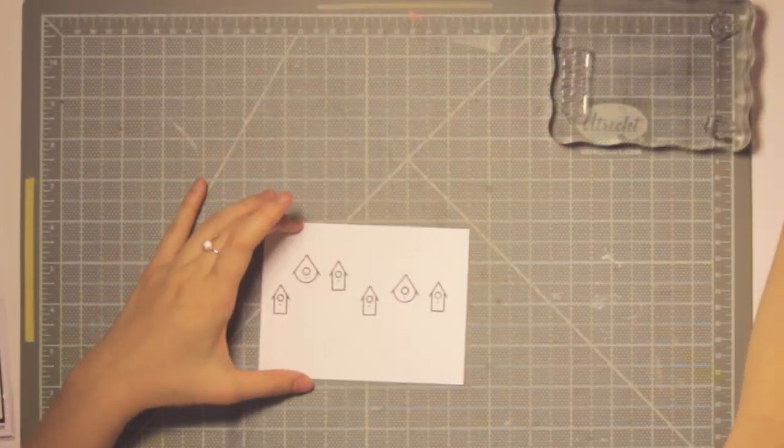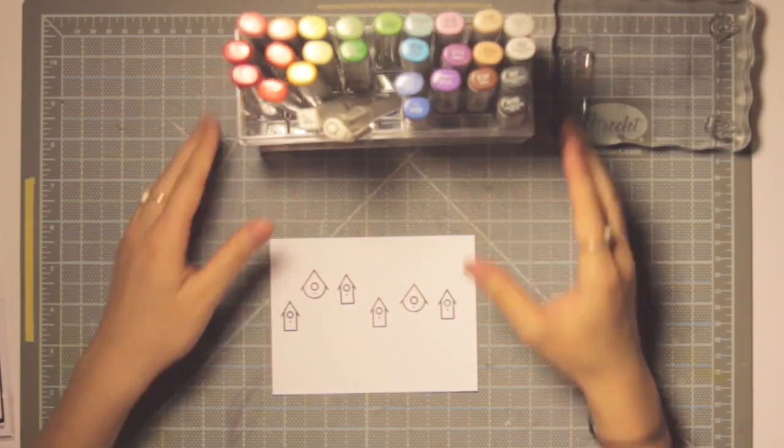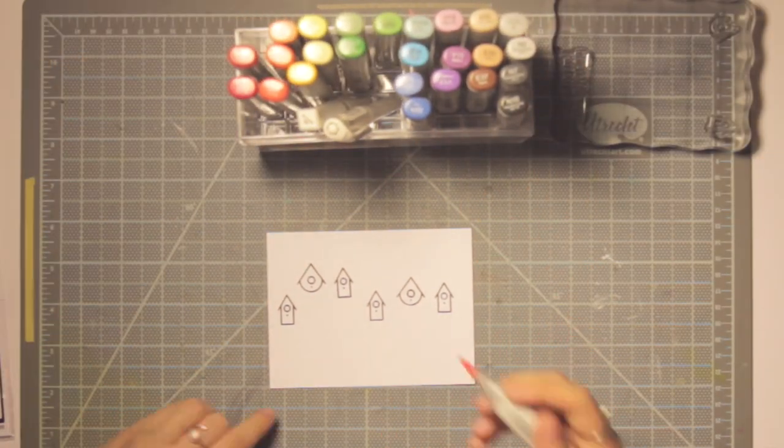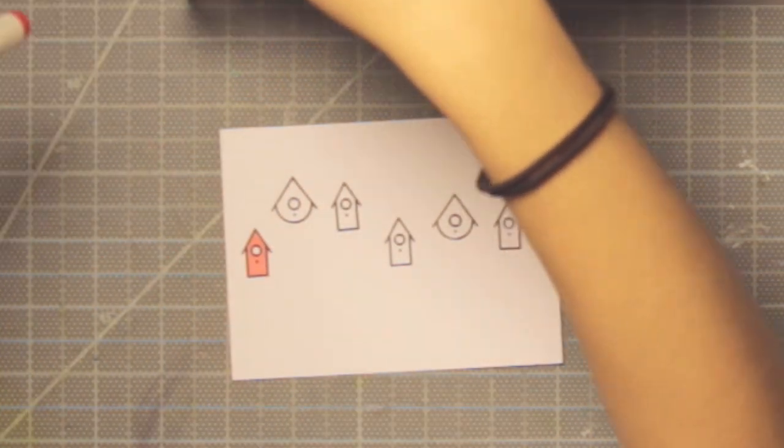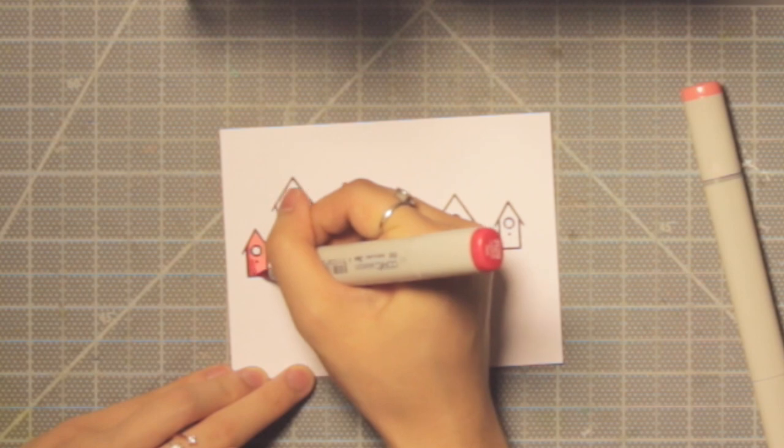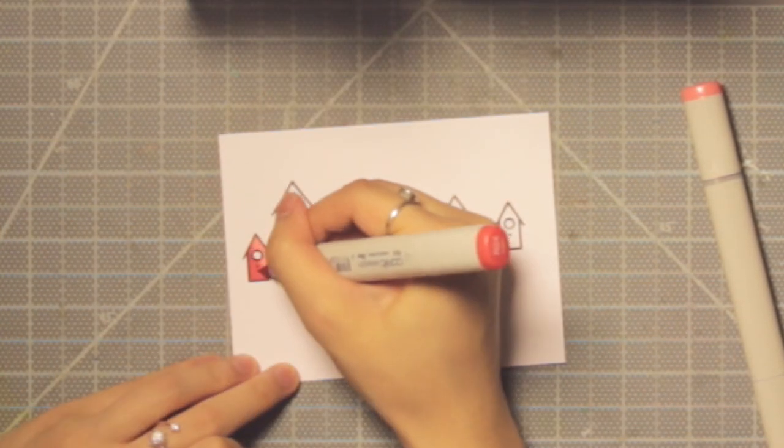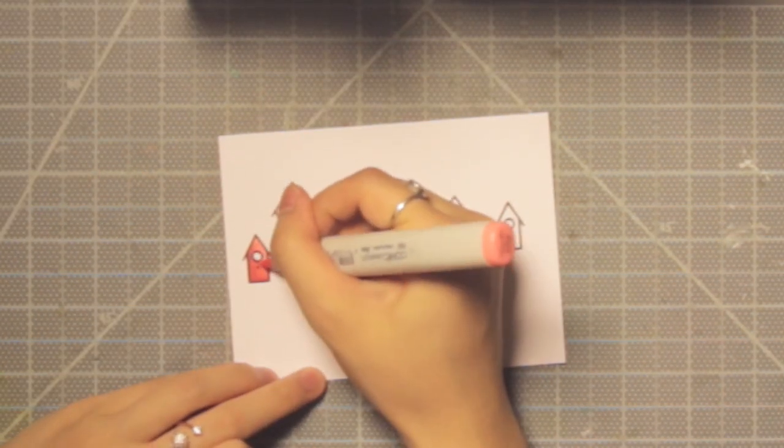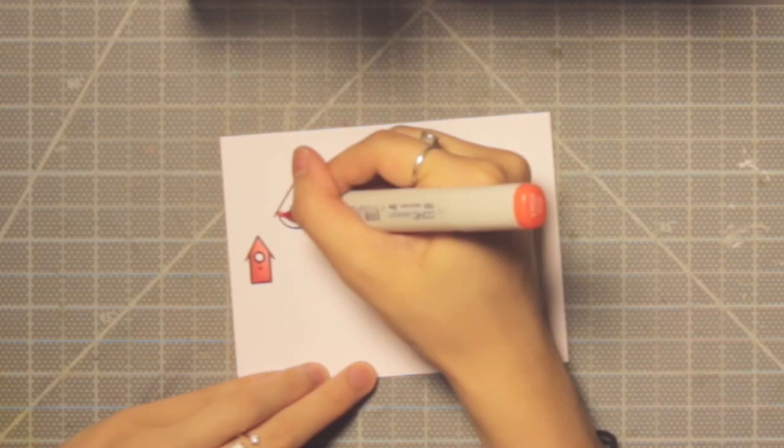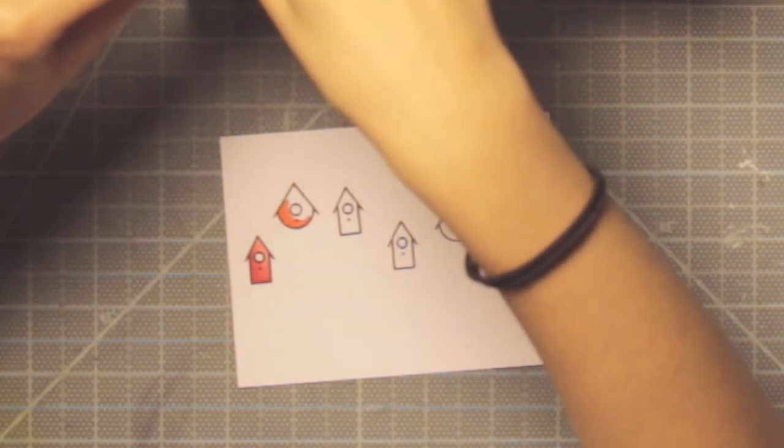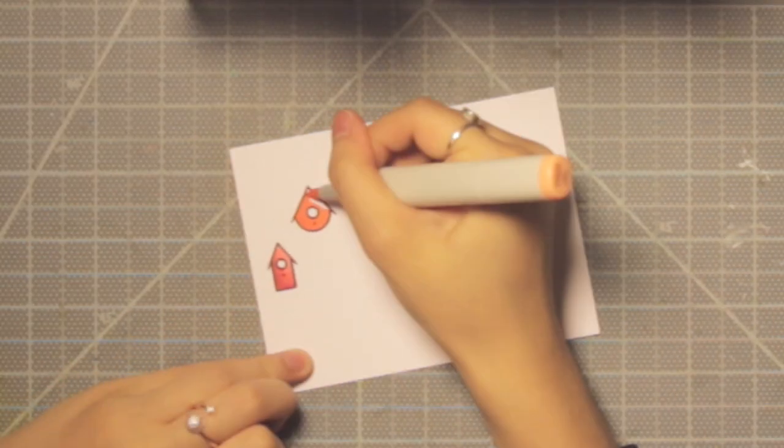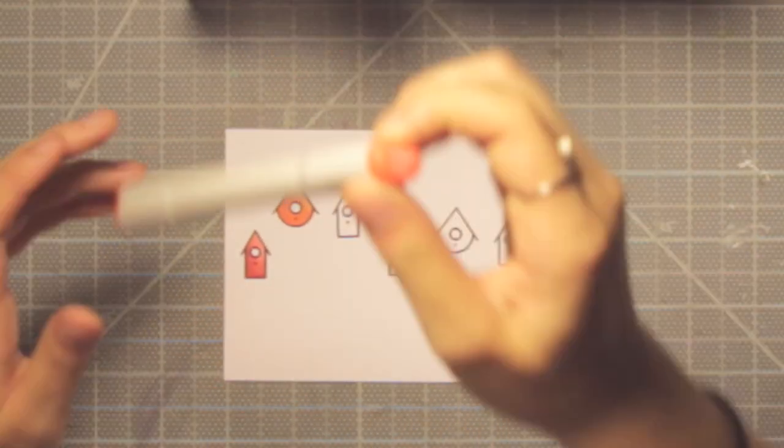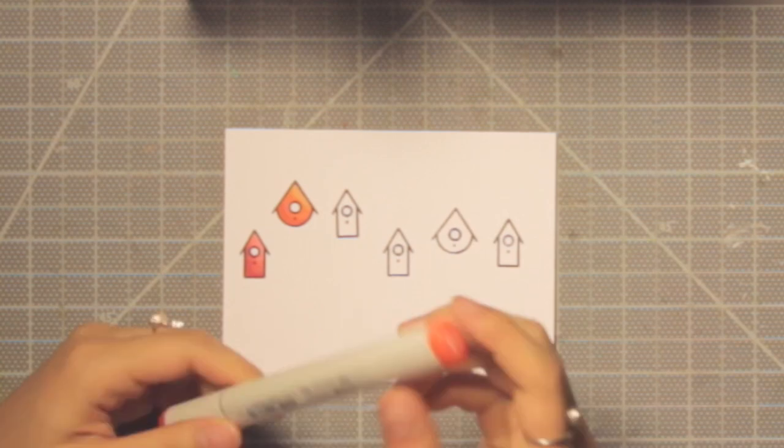So I pulled out my Copic markers, which you can see here. This is my very small and humble collection, but I have recently expanded to have some markers in every color family. So that's why I thought it would be fun to just go with a rainbow theme today. So I get to use a little bit of every single color. So I'm just going in a typical rainbow order: red, orange, yellow, green, blue, and purple. Those are the colors I'm using for my six birdhouses.